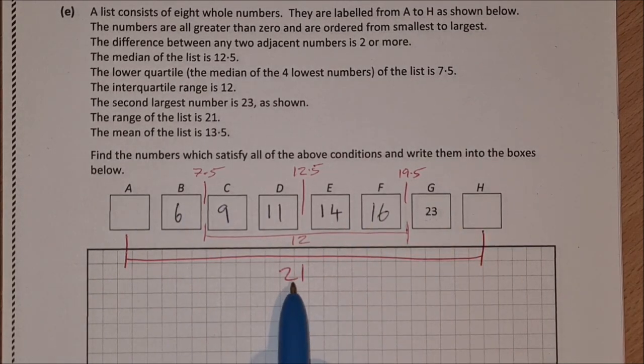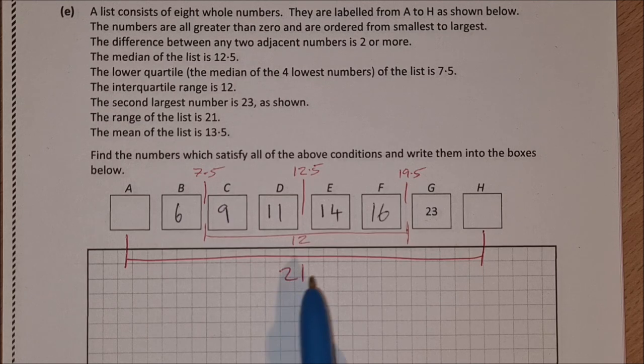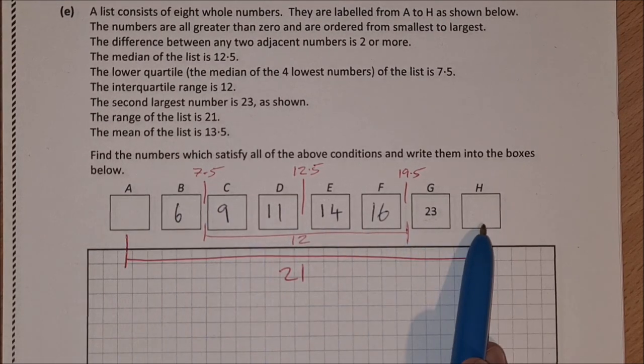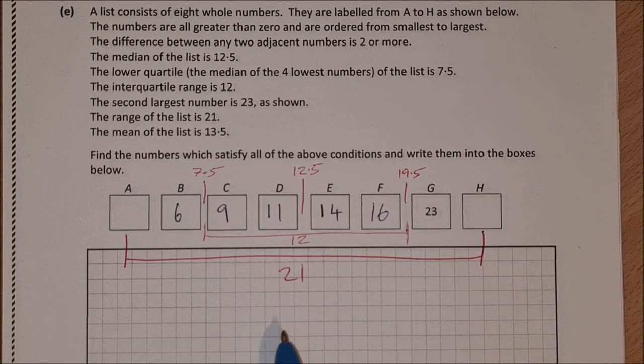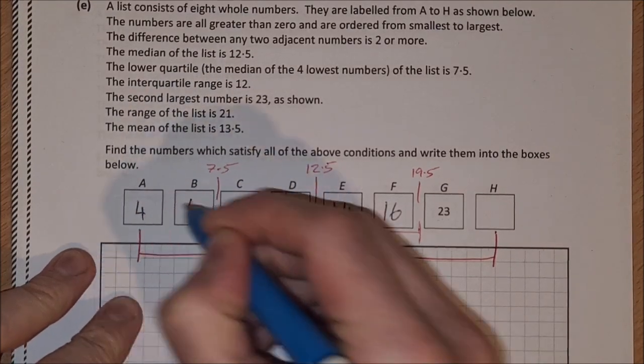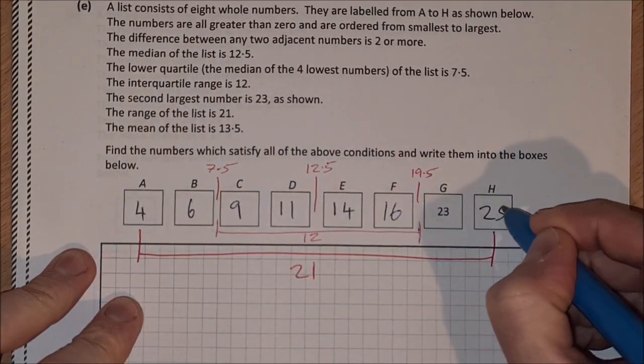So if that was 4 and that was 25, the difference would be 21. If we went to anything else, let's say we went 3 and 25, then that wouldn't work because the difference is 22. So it has to be 4 for A and 25 for H.